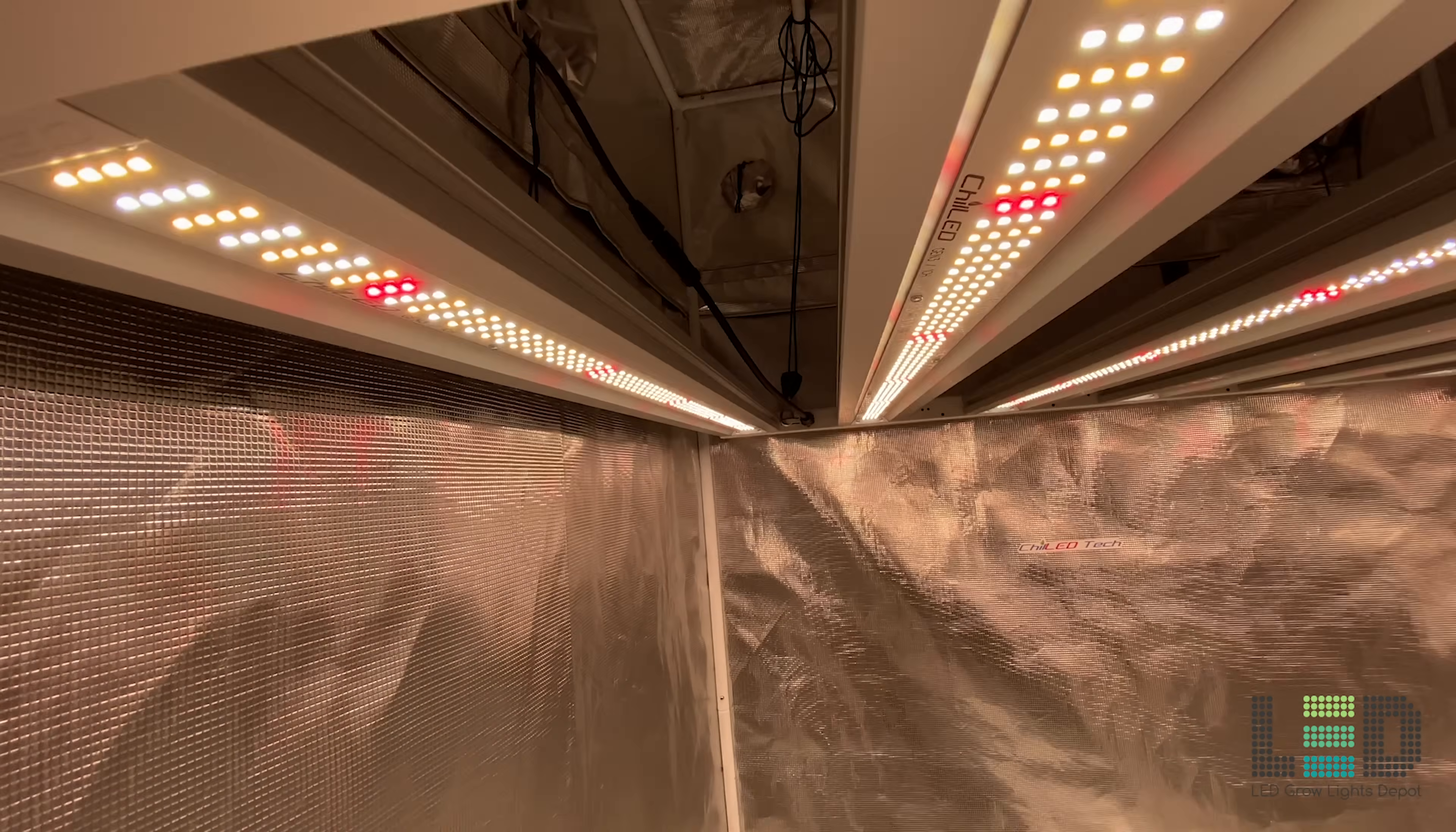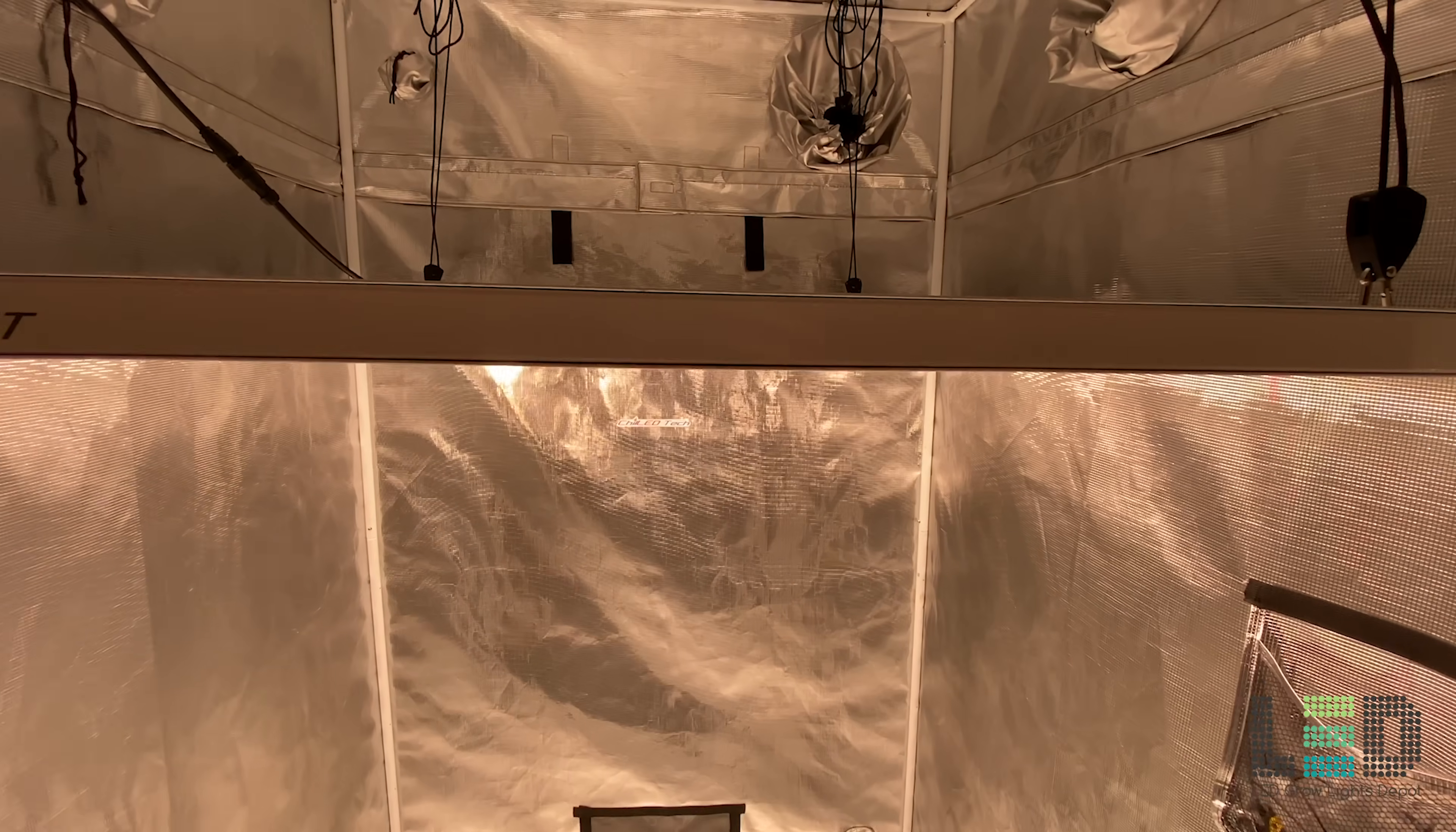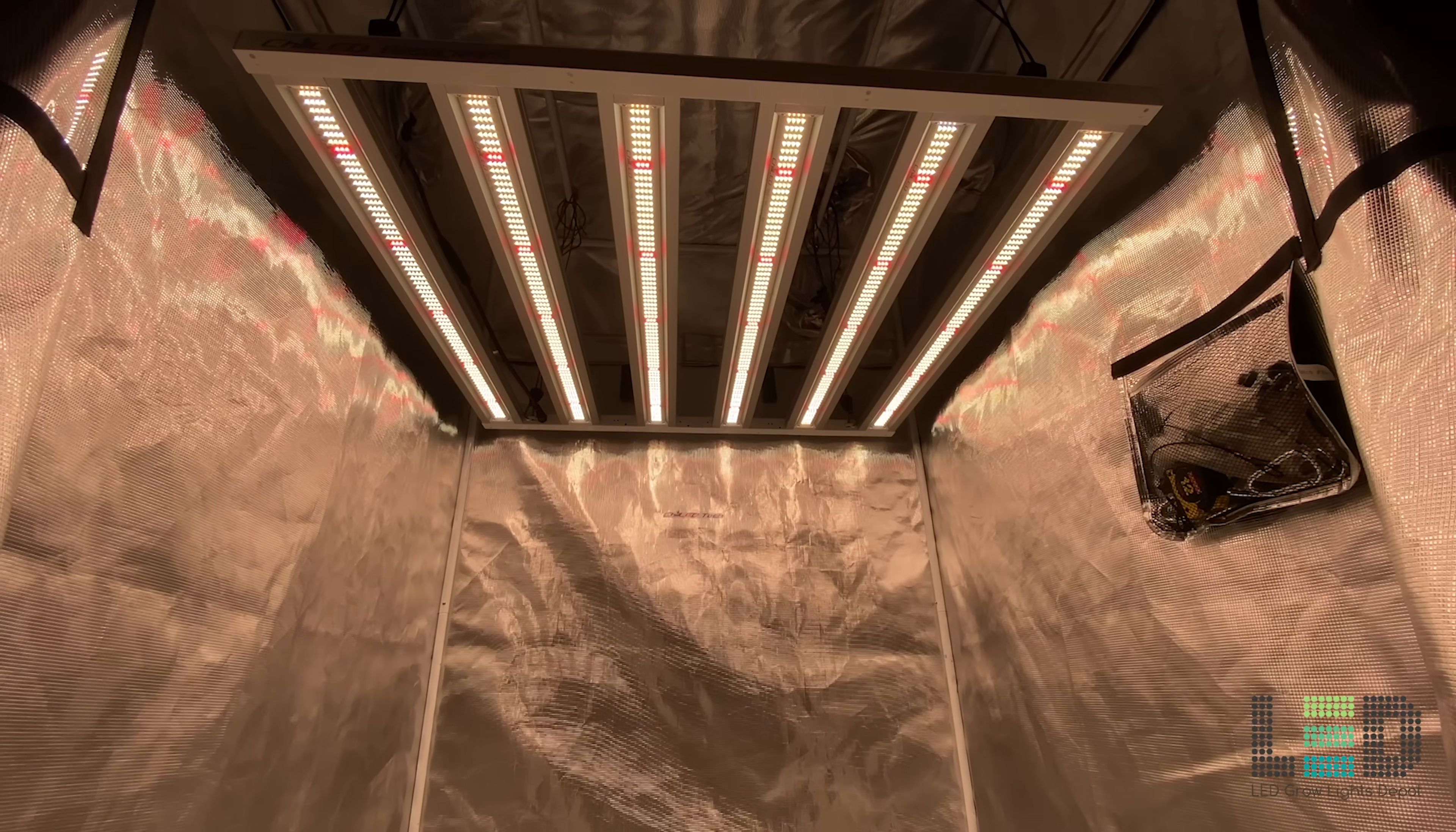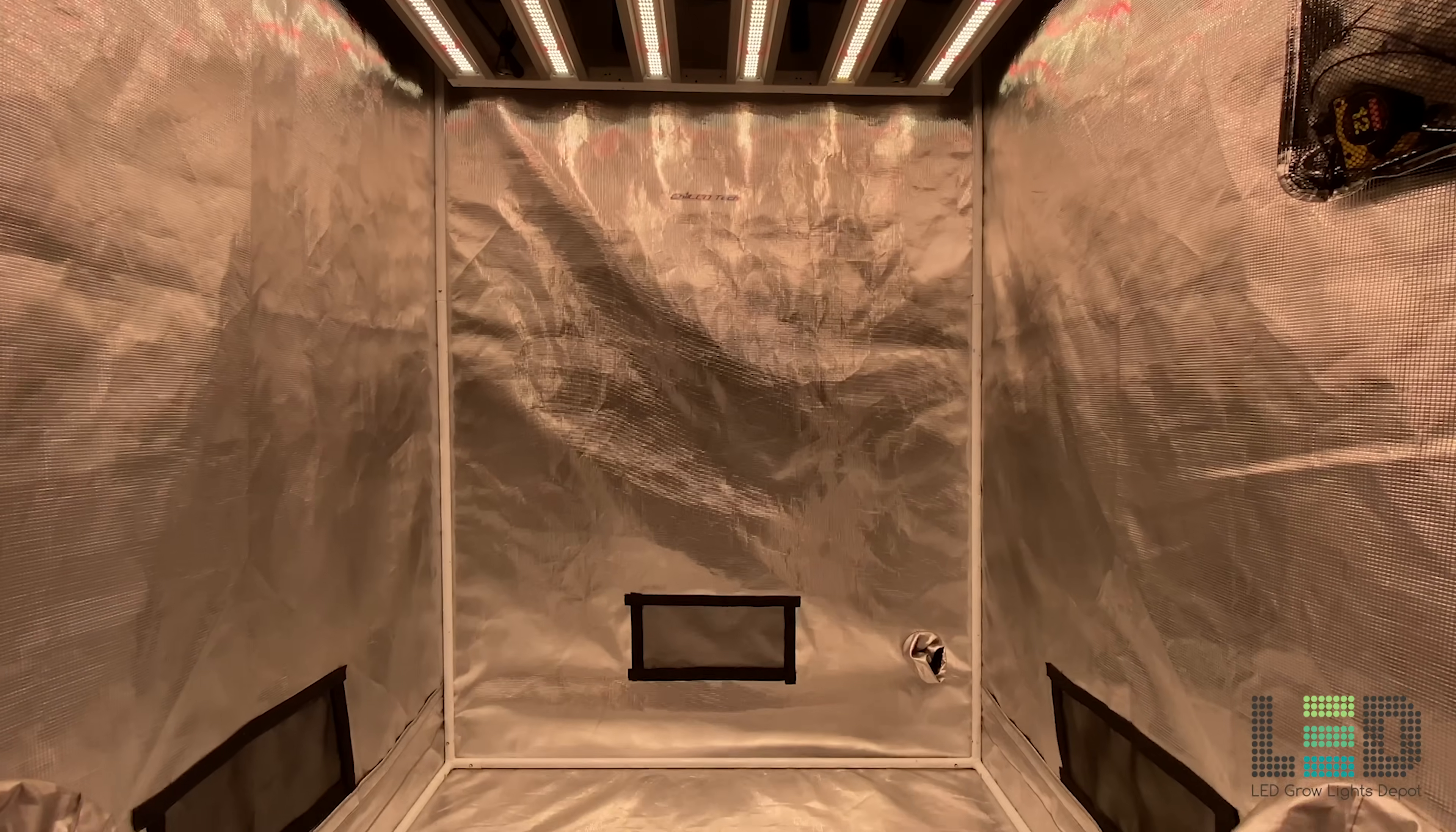The total light output is reported at 1647 micromoles per second. Given the light output and shape of the X6, it will cover a 4x4 area or up to a 5x5 area at lower light intensity. The fixture is designed to be used at 12 to 24 inches in most applications and expect about a 6x6 coverage area for vegetative growth.